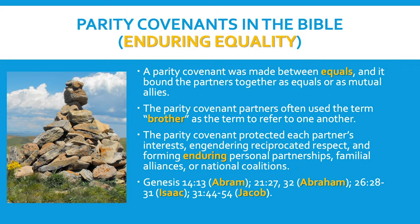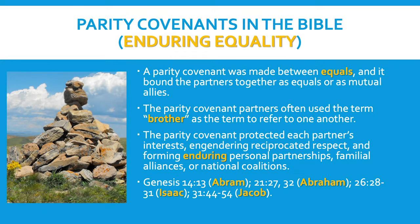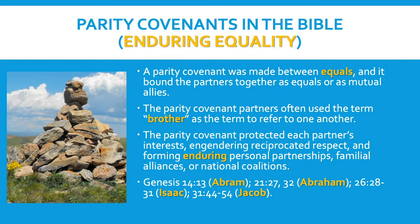On the next slide, we have this summary statement concerning the Parity Covenants in the Bible. The key to remember here is that they enacted an enduring equal relationship. The Parity Covenant was made between equals. The term often used to describe the two Parity Treaty partners was 'brother' — a familial term, but in this context actually a technical treaty term, with one partner referring to the other as a brother.